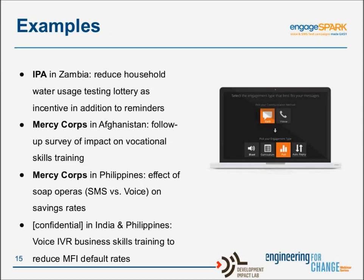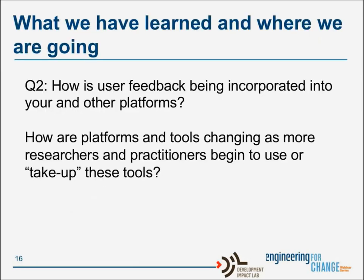Some examples: IPA in Zambia is using voice and SMS surveys to reduce household water usage using a lottery as an incentive. Mercy Corps in Afghanistan used weekly phone calls to track whether vocational course participants found jobs and to rate training quality. Mercy Corps in the Philippines ran a program with 20,000 people — a soap opera-based training measuring the effect of SMS versus voice on increasing savings rates. There's also an ongoing program using voice for business skills training to reduce MFI default rates.